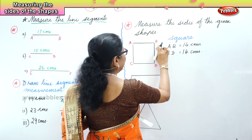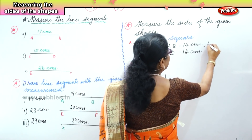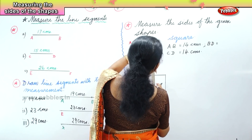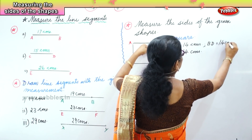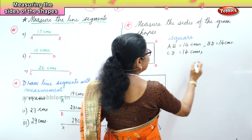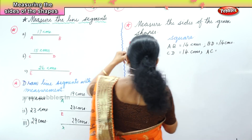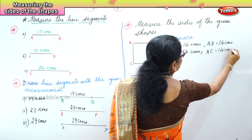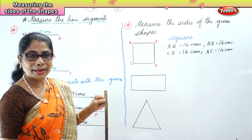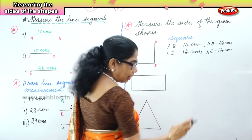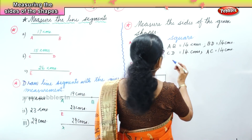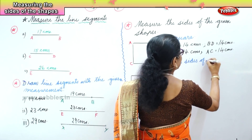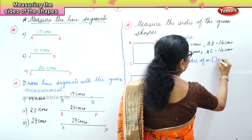Then you measure BD. You put the zero on B and you see it is 14 centimeters. And finally, measure AC — put zero on A and it is 14 centimeters. That means all the sides of a square are equal. We measured all the sides of a square and they are equal.